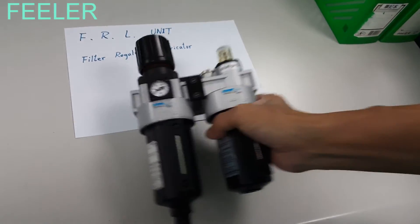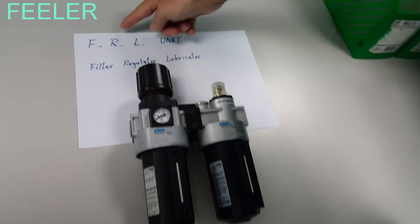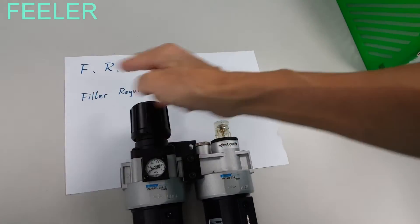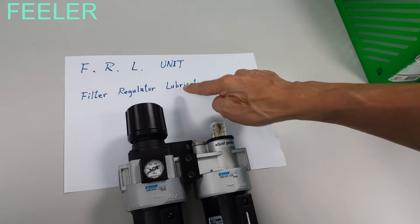Okay, today we introduce the FRL unit. F means filter, R is regulator, and L is lubricate.